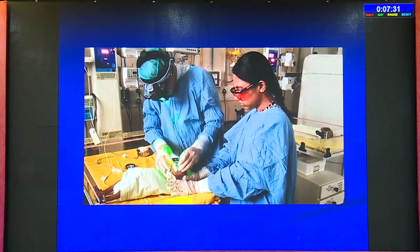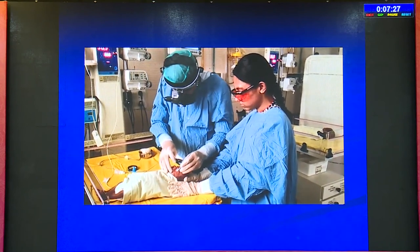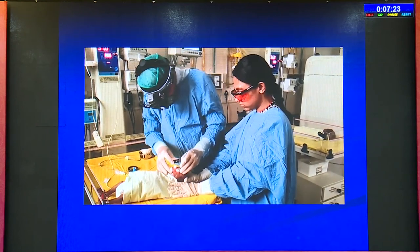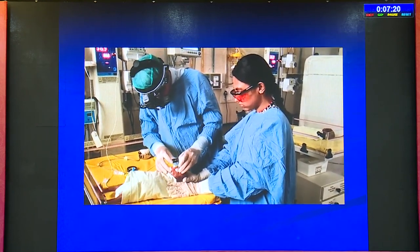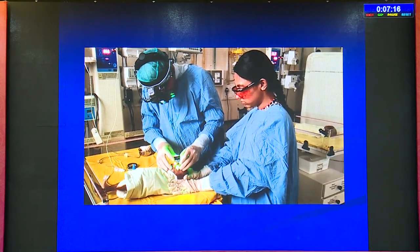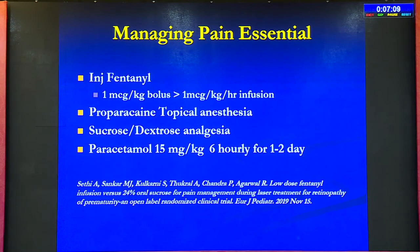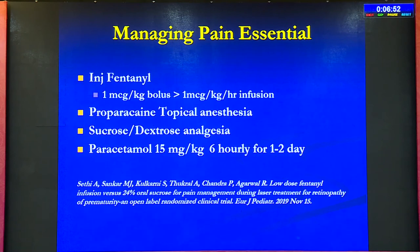Proper precautions must be taken: laser goggles must be worn, wear gloves, and the child must be immobilized. Even though the child's feet may be moving, you can continue the procedure — a bigger child may need more immobilization. Managing pain is essential. We typically do this under topical anesthesia; the Western world prefers GA, but many anesthetists will not take a 34–36 week child for GA. We use injection fentanyl — 1 microgram per kilogram bolus, followed by 1 microgram per kilogram per hour infusion — combined with topical drops, oral dextrose, and post-op paracetamol. Still, GA is obviously the best option if it can be provided.